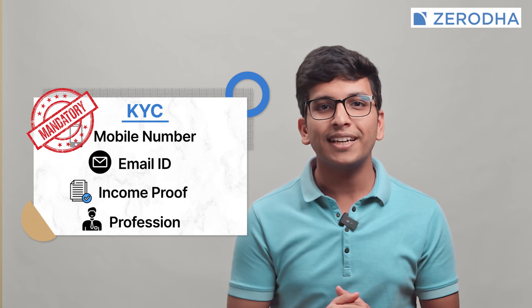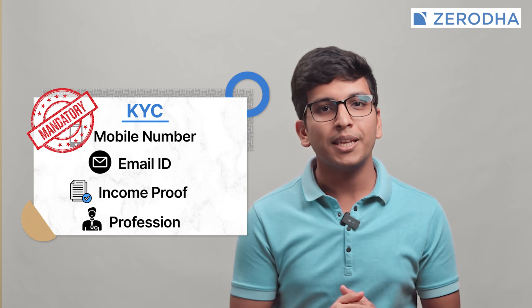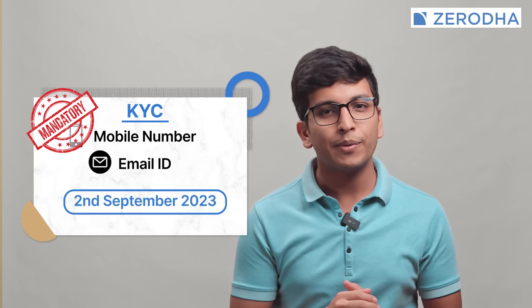The deadline to validate the mobile number and email ID was 2nd September 2023. Zerodha has notified clients on multiple occasions to update these details. If you still have not updated and validated these details, the exchange will consider your account as ineligible for trading and you will not be able to place any buy or sell orders or exit any existing positions.